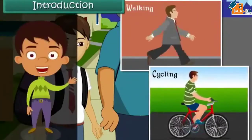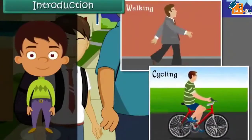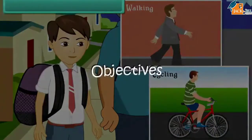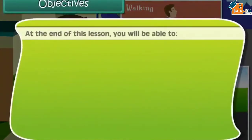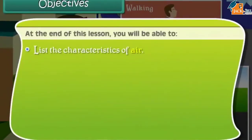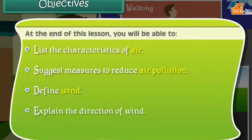In this lesson you will learn about air and its pollution. At the end of this lesson you will be able to list the characteristics of air, suggest measures to reduce air pollution, define wind, and explain the direction of wind.